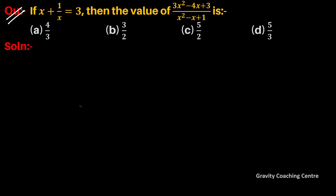Given that x + 1/x = 3, find the value of (3x² - 4x + 3) / (x² - x + 1).